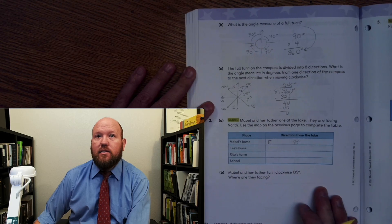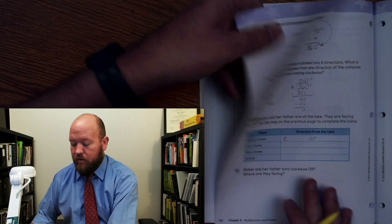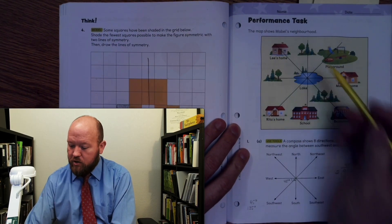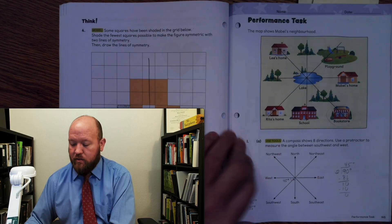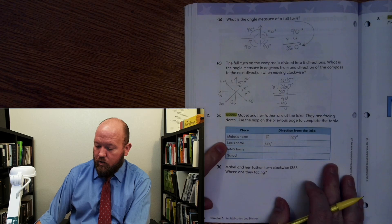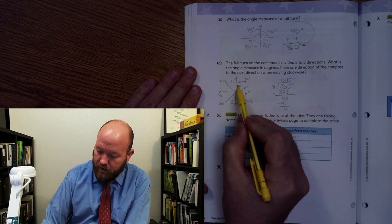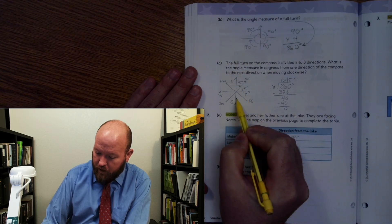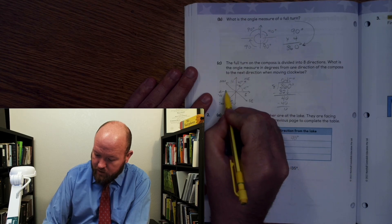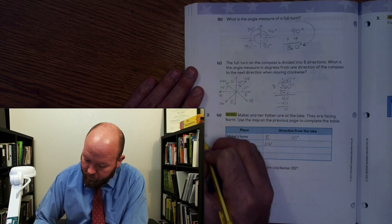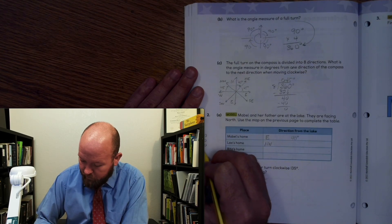All right. Now let's look at Lee's home. Okay. So standing at the lake, we want to go to Lee's home. We're going to go up that direction. And so what is that direction? Northwest. Okay. So northwest. Right now, I want to see how many degrees it is. So here you can see you got to go to get northwest. You got to go 90 degrees, 90 degrees, 90 degrees, and then this little bit right here. And how far is that? 45.